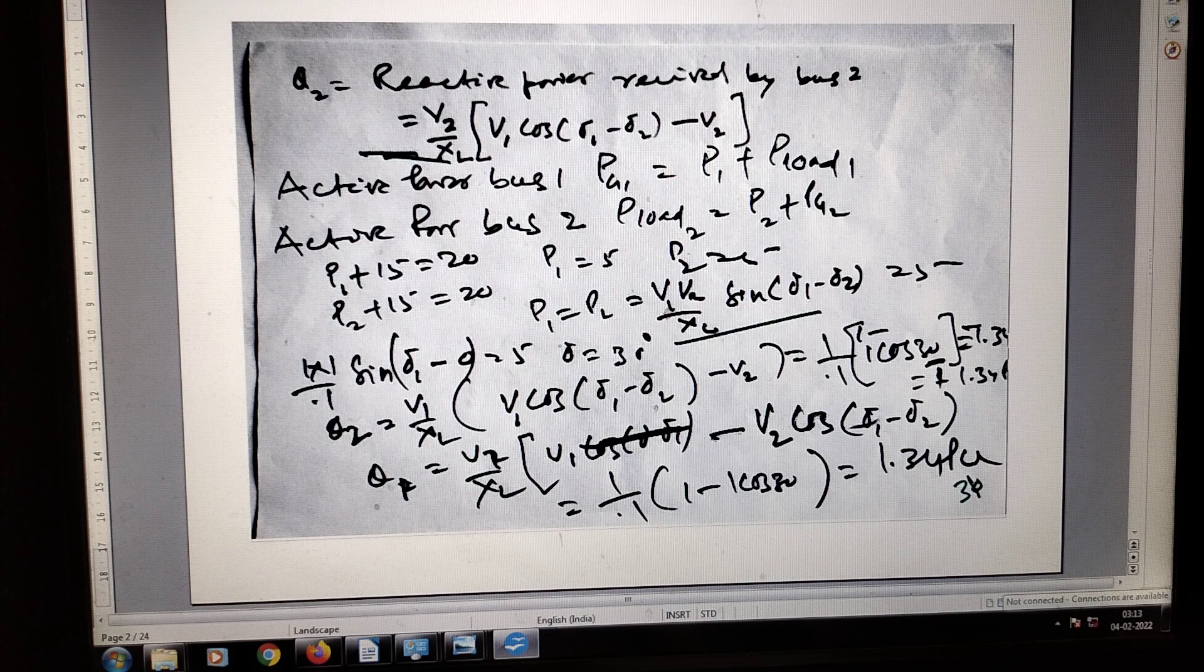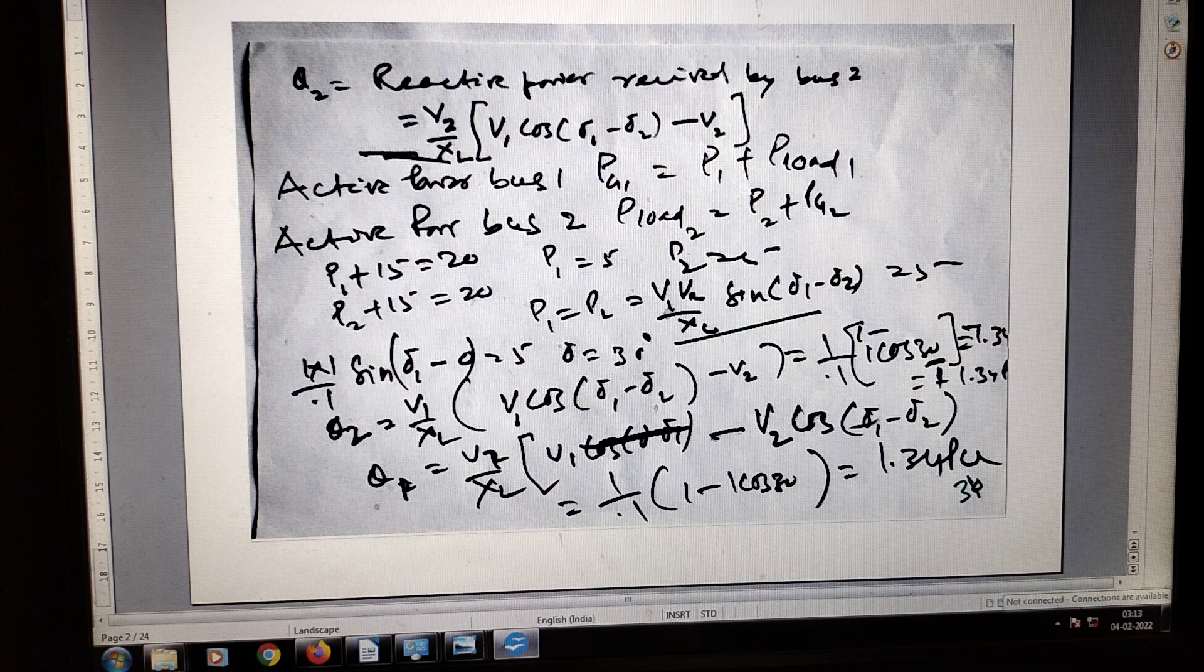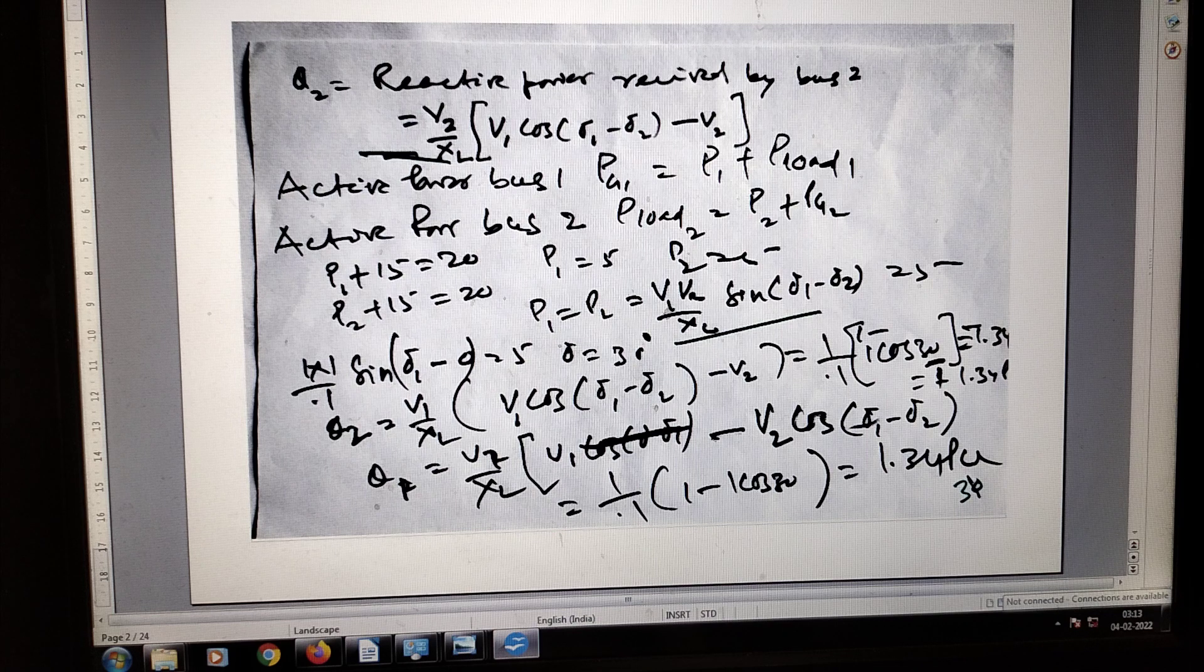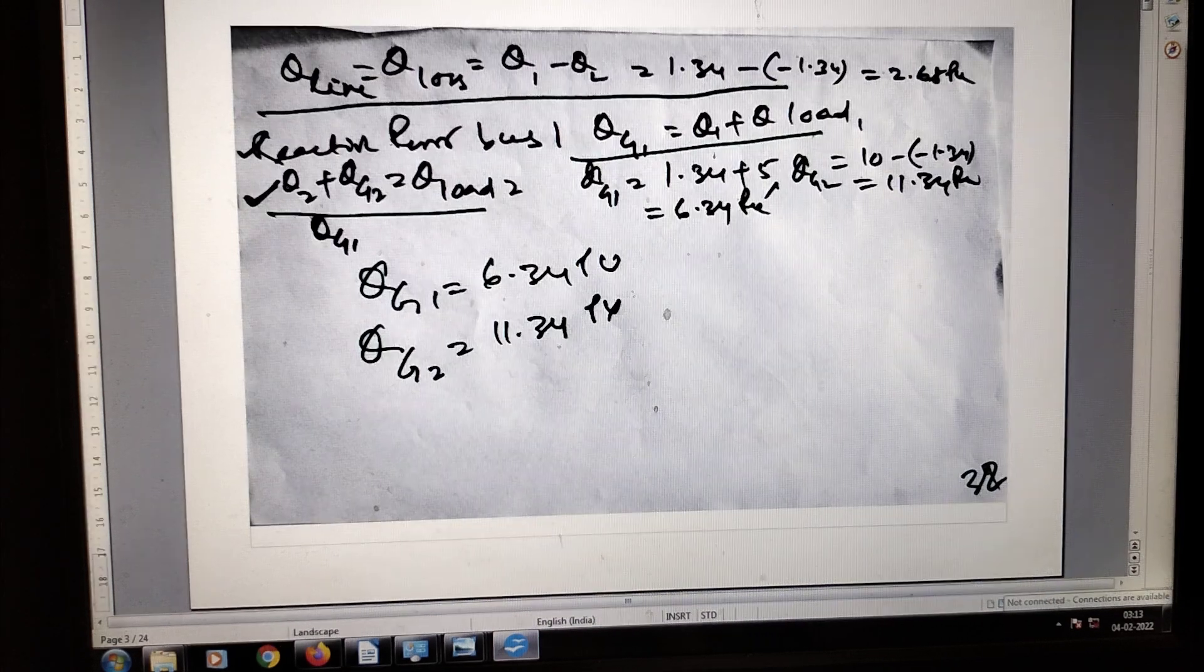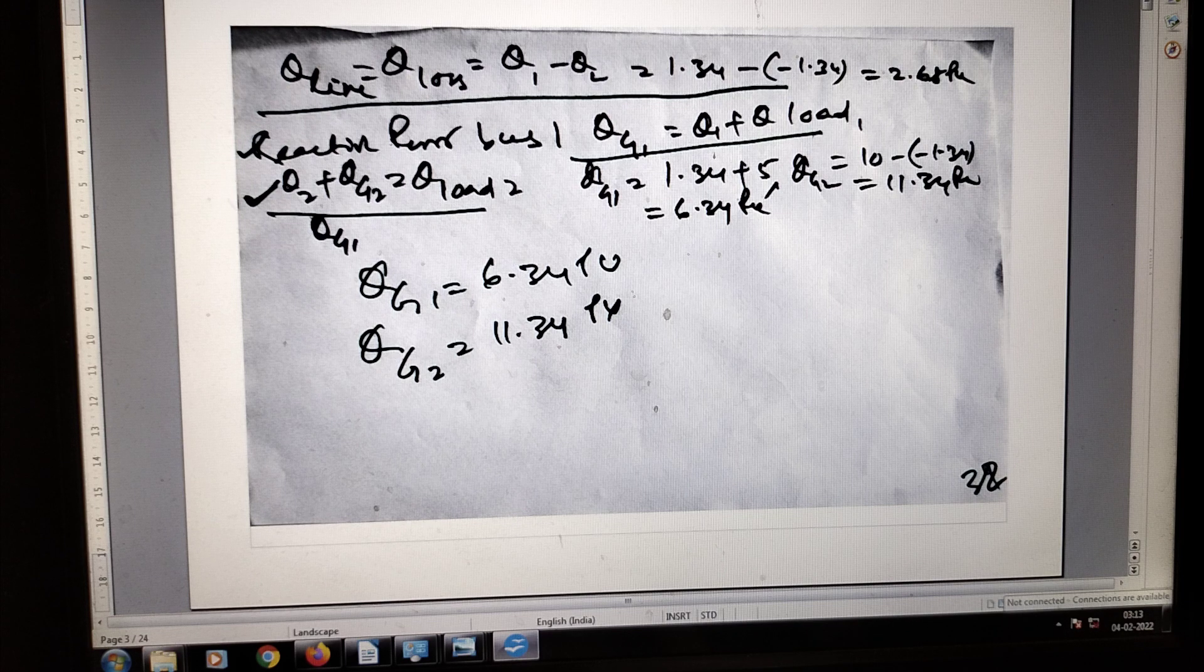Here also reactive power received by bus 2, active power bus 1, active power bus 2. Then from here you will get Q line, Q loss, reactive power bus 1.